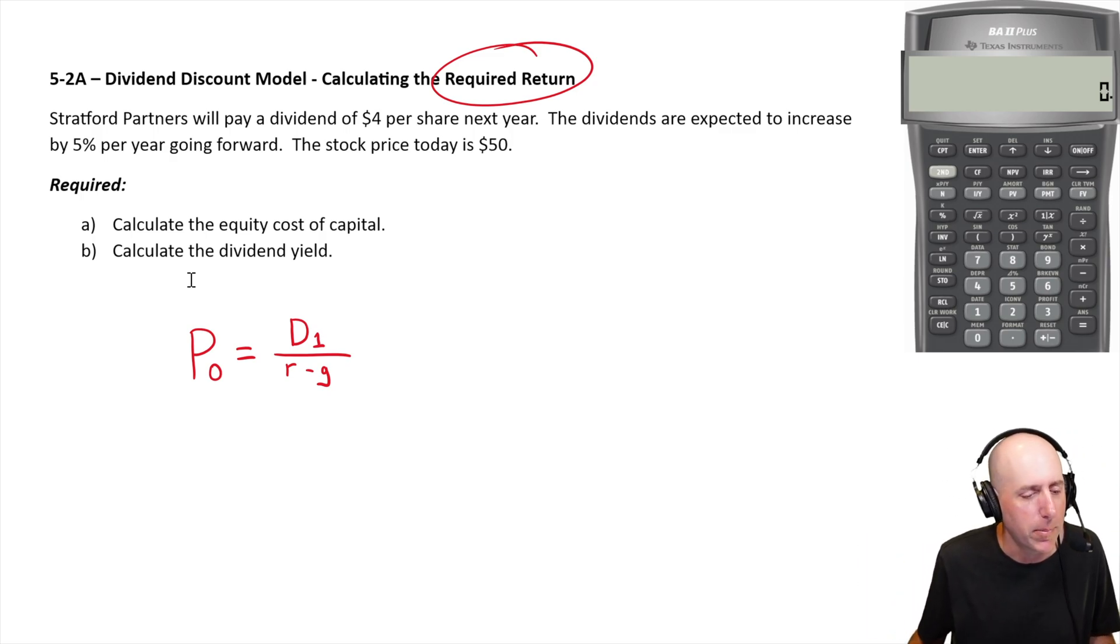Let's look at the problem and see what we're up against. Stratford partners will pay a dividend of $4 per share next year. The dividends are expected to increase by 5% per year going forward. So first of all, they will pay a dividend of $4 per share next year.